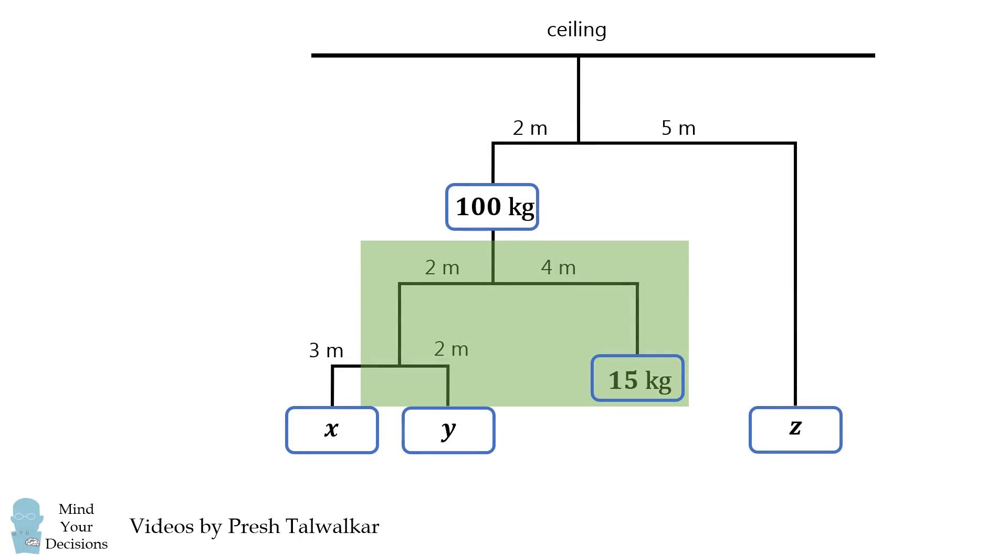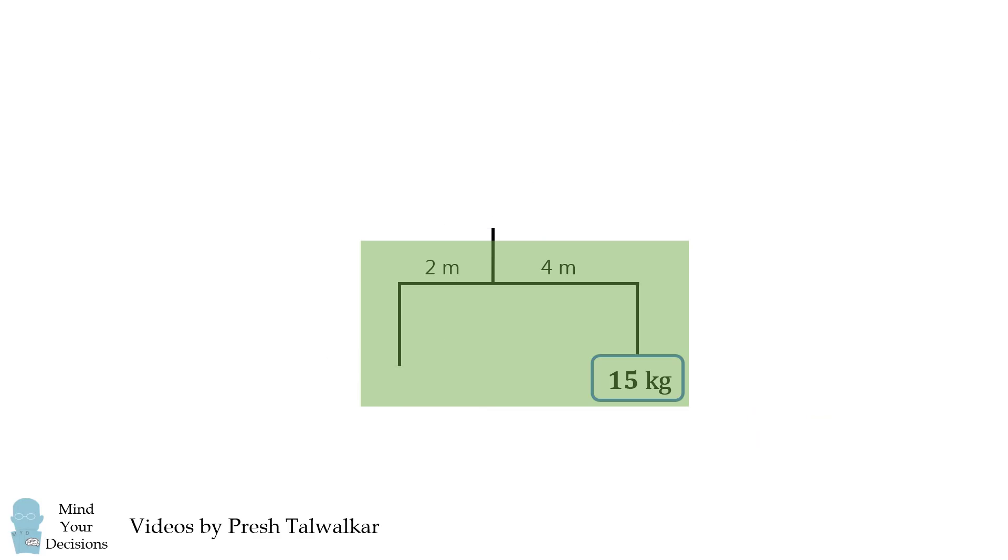Focus on this part of the diagram. Suppose the left side has a mass of m1. Then m1 times d1 has to equal m2 times d2. We substitute in the values for this diagram, and then solve for m1. m1 works out to be 30.